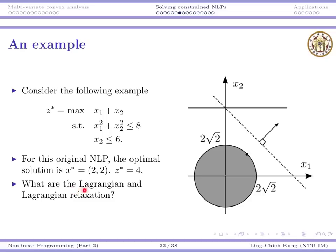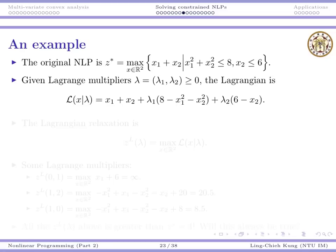Let's try to find the Lagrangian and the Lagrangian relaxation. The original nonlinear program is here. There is an objective function and 2 constraints.